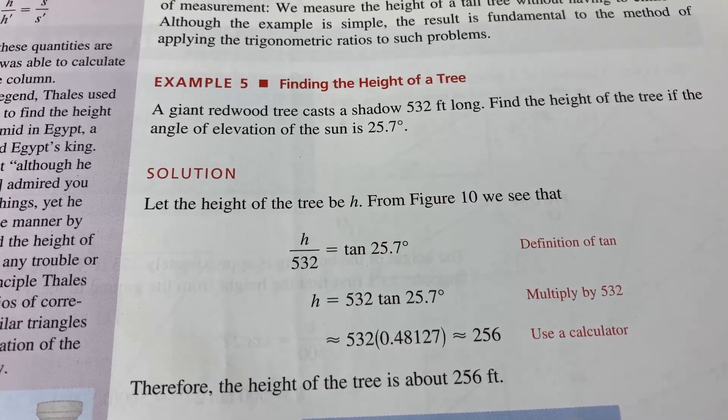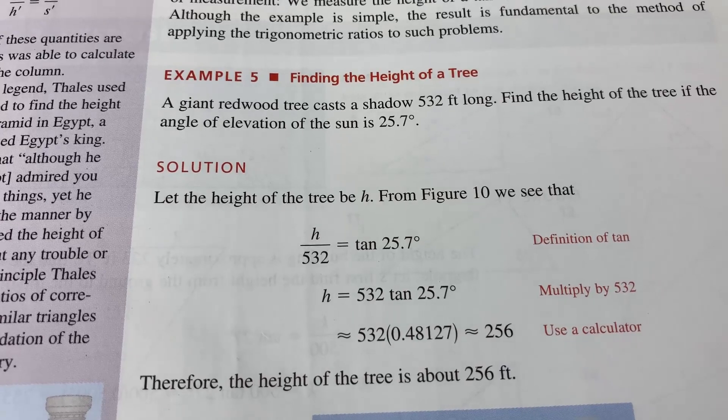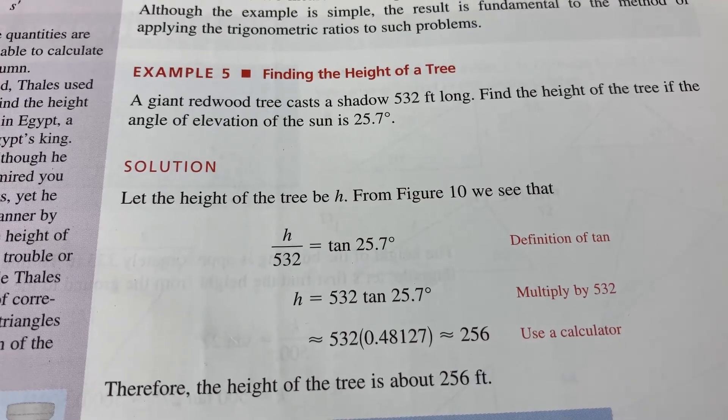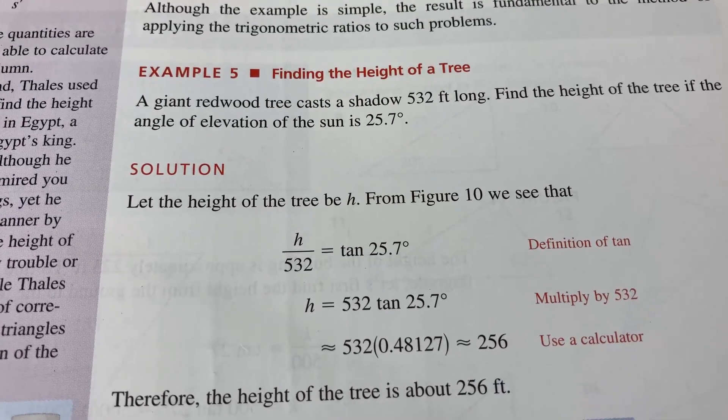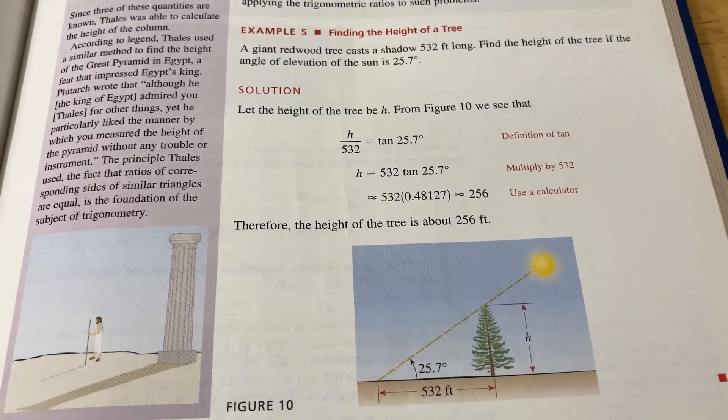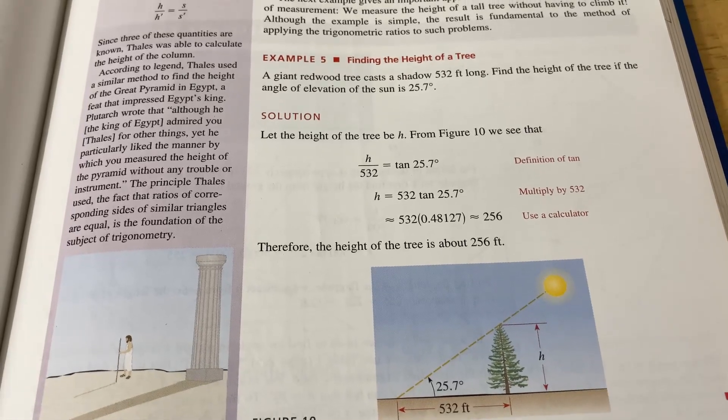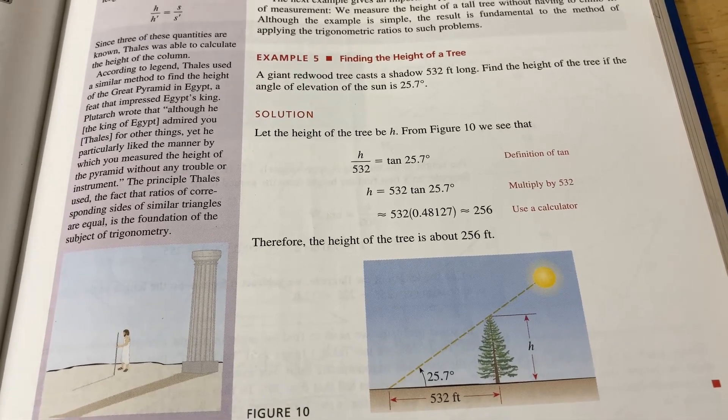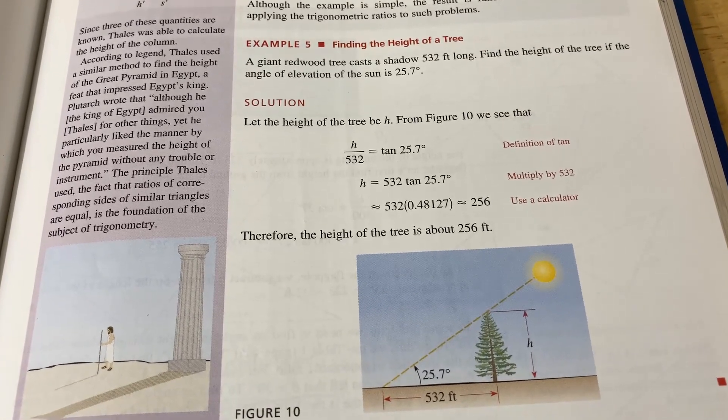For example, here, they give you the shadow that a giant redwood tree casts. And they ask you to find the height of the tree, given the angle of elevation of the sun. This is a classic problem that is done in pretty much any trig course you take. And so by having this book, you have extra examples that you can use to help you in your course.